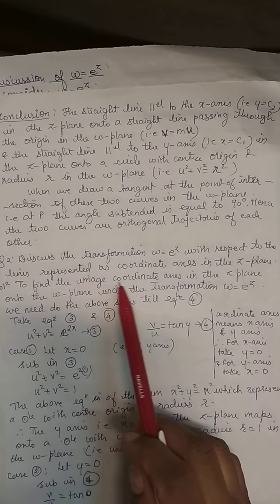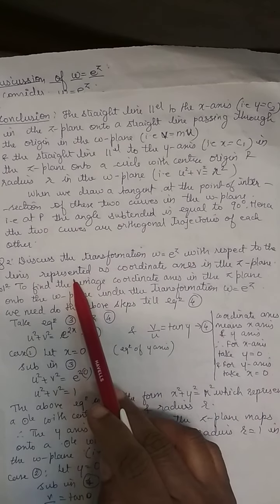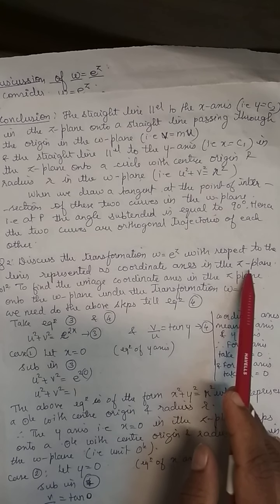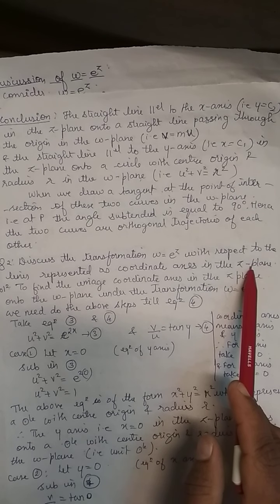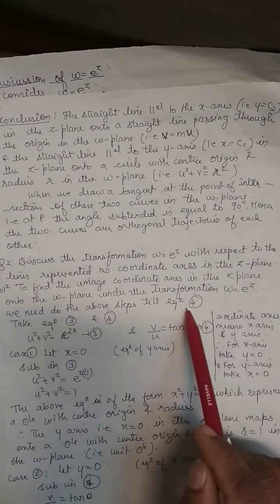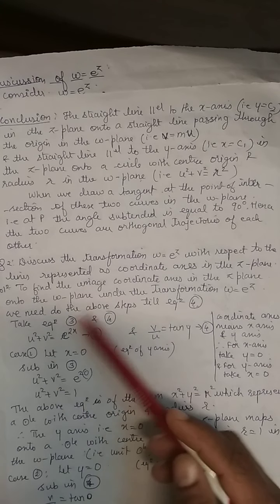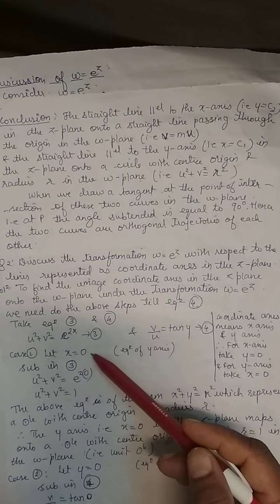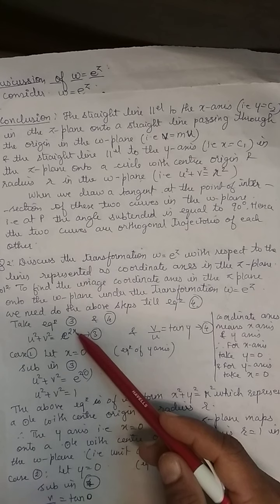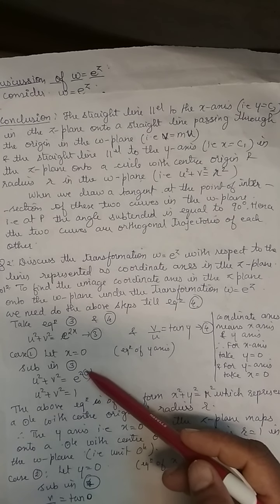For sub-question 2, the question asks to discuss the transformation w = e^z with respect to the coordinate axes. Coordinate axes are the x-axis and y-axis. For the y-axis, take x = 0; for the x-axis, take y = 0. Repeat steps through equation 4, then start Case 1: let x = 0. Substituting into equation 3: u² + v² = e^(2×0) = e^0.